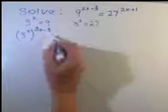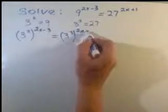3 squared to the 2x minus 3 equals 3 cubed to the 2x plus 1.